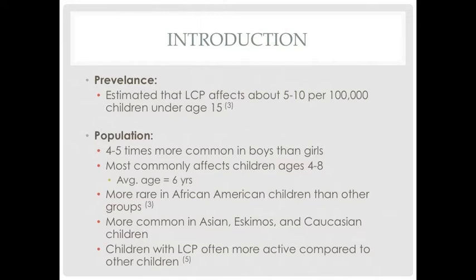Perthes disease is 4–5 times more common in boys than girls. While children between the ages of 2–15 may get the disease, it most commonly affects children between the ages of 4–8. The disease is found most often in Asians, Eskimos, and Caucasians, with a much lower incidence found in Australian Aboriginals, Native Americans, Polynesians, and African Americans.